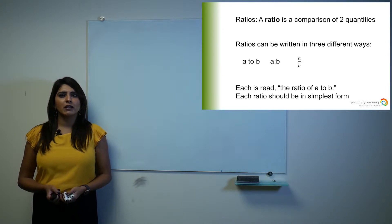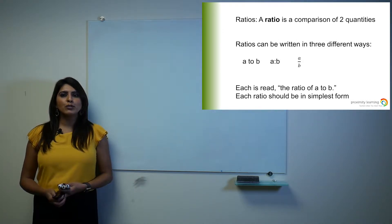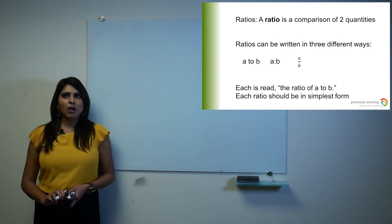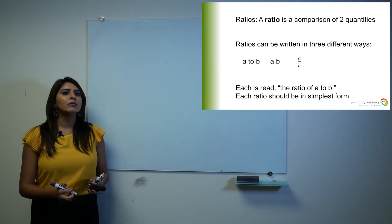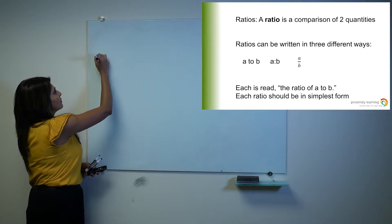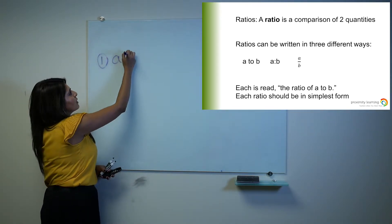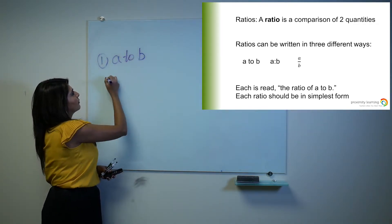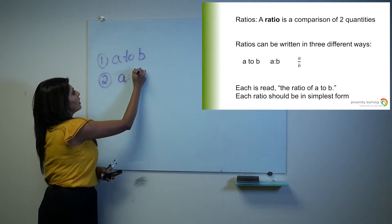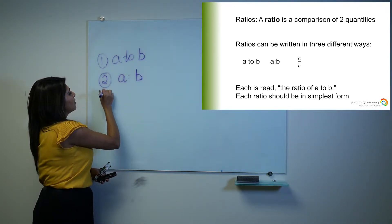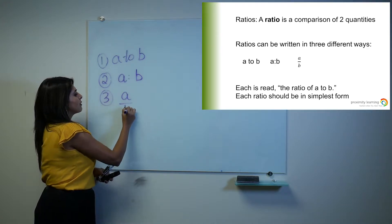The first thing we're going to discuss is how do you write ratios? There are three different ways of writing a ratio. The first one is by using the word 'to'. The second one is by using a colon. And the third way is to write it as a fraction.